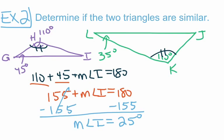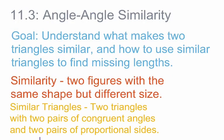That wraps up the first part of our goal, where we were determining if two triangles are similar. For the next part, we're going to be using similar triangles to determine the missing length of a side. If we know two triangles are similar, then we know that all corresponding sides of the triangles are going to be proportional, and we can use that to help us find the measure of a missing side.